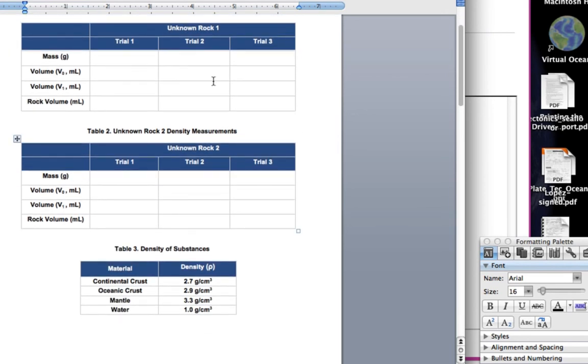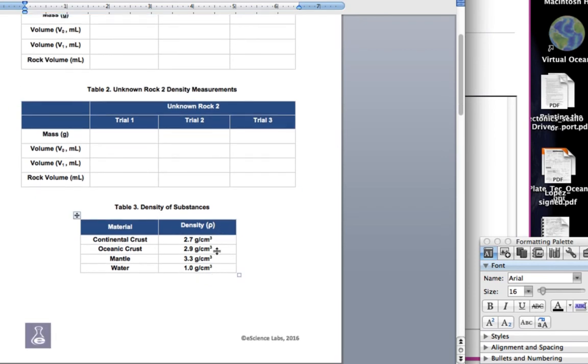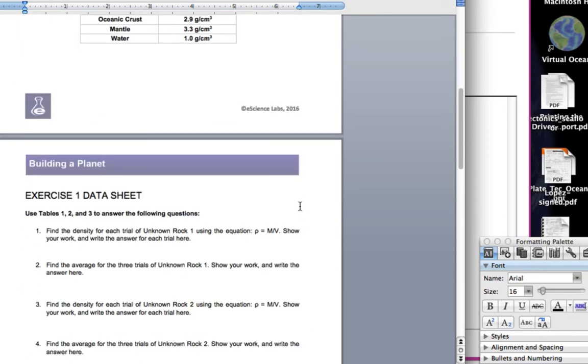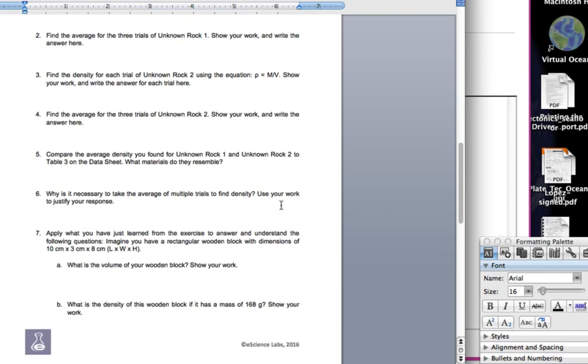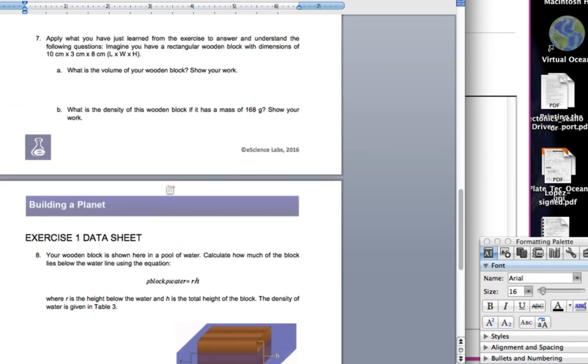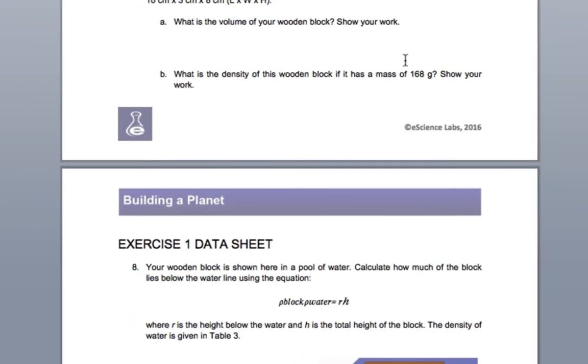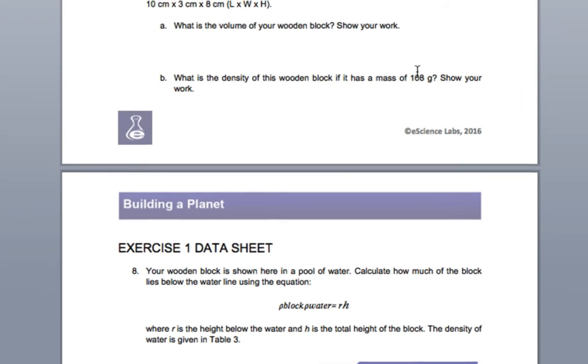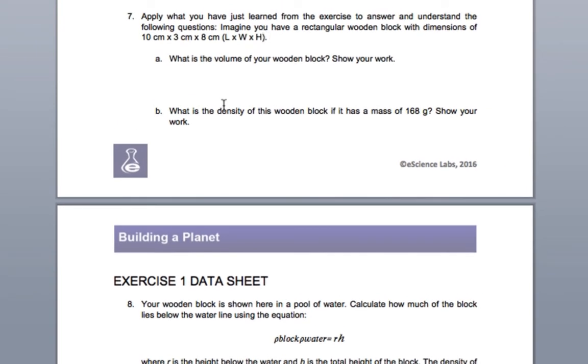Remember, the density is the mass over the volume. Then based on the numbers you get - remember, you're doing it three times to get an average of the sample here - you'll compare it to these densities to see what your material, what your rock most closely represents here. There's more information. You'll answer some questions here on the data sheet. Then you'll submit this online.